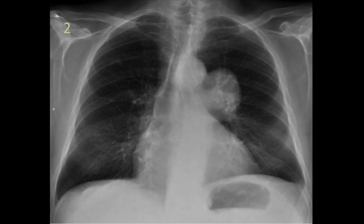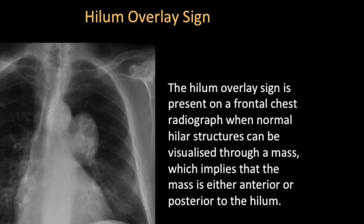This brings us to the definition of the hilum ovale sign. The hilum ovale sign is present on a frontal radiograph where normal hilar structures can be visualized through the mass. This means that the mass is either anterior or posterior to the hilum. In our case, as we saw, the lesion is very clearly defined.